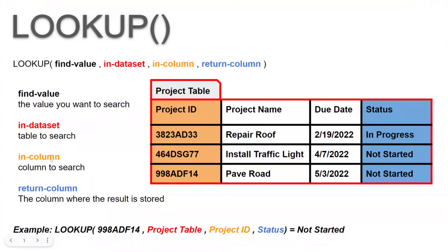The third entry is in column. This is where you're going to identify the column itself that you want AppSheet to search for that find value. That'll be the unique identifier for that table — typically the key of the table you're searching. So here I'm showing Project ID as the unique identifier.